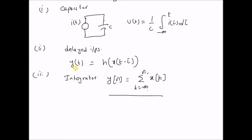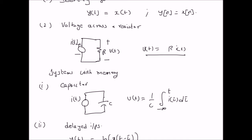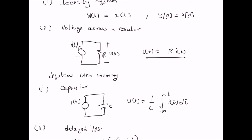Another possible example for a system with memory is a feedback system — when the system has the transformation h of x(t) plus g of y(t minus τ). That is, the current output is not only a function of the current input, but it is also a function of the transformed version of the previous inputs. So the basic difference between systems with memory and without memory is that in systems with memory, the output depends not only on the current input but also on the previous inputs or at least some of the previous inputs. For systems without memory, the output is only a function or transformation of the current input.